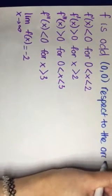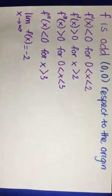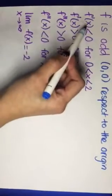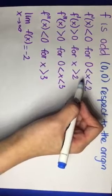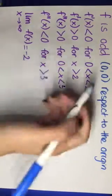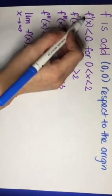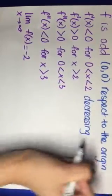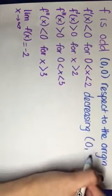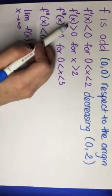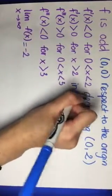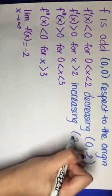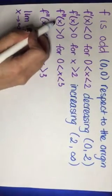The second condition is that the first derivative is less than zero for X between zero and two. This means the function is decreasing from 0 to 2. And the first derivative is greater than zero for X greater than two, meaning the function is increasing from 2 to positive infinity.